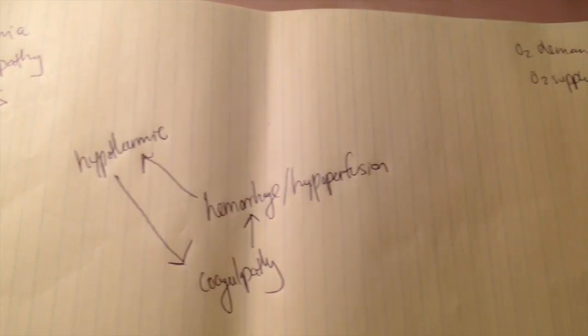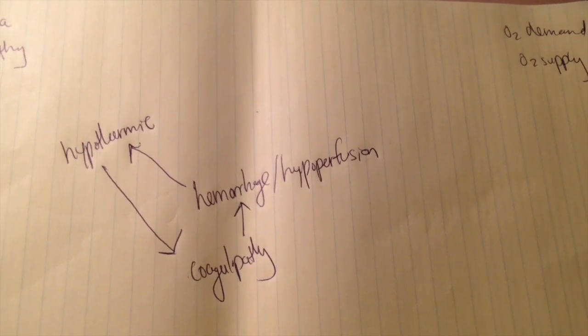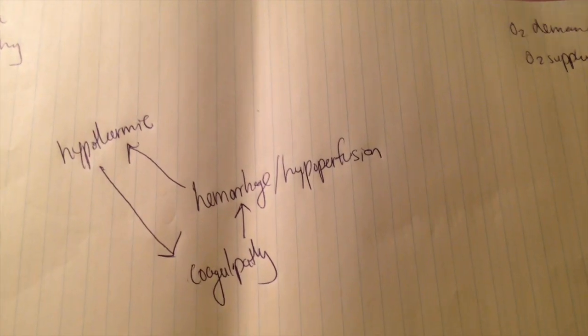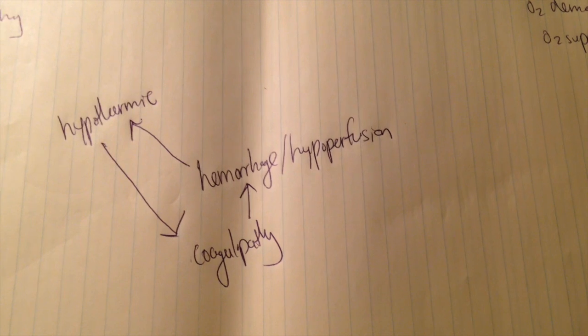But in this situation, when there's this imbalance, the tissues, which need energy to function, are going to move away from the production of ATP, which requires oxygen, and they're going to move toward a more anaerobic form of metabolism.